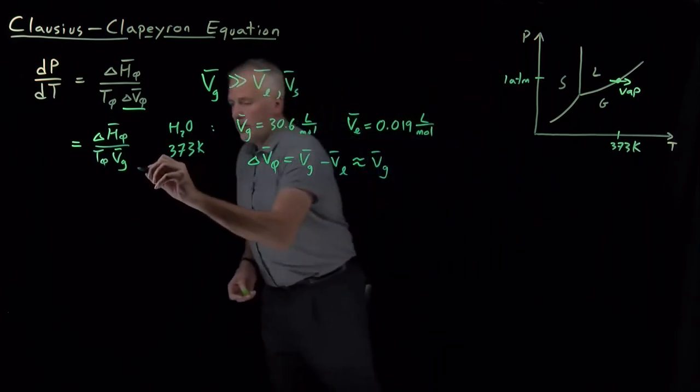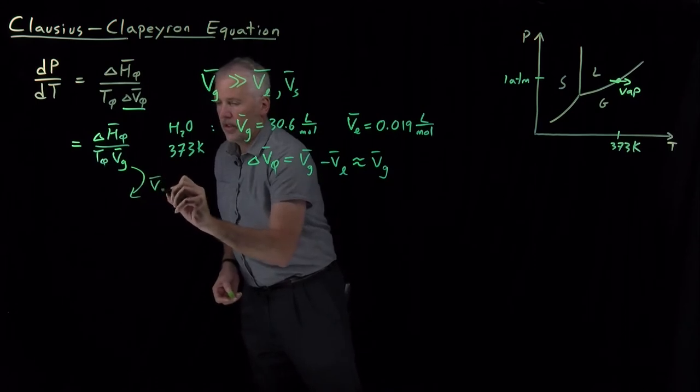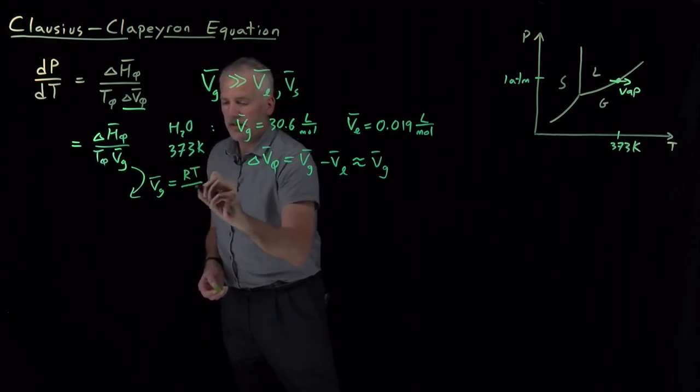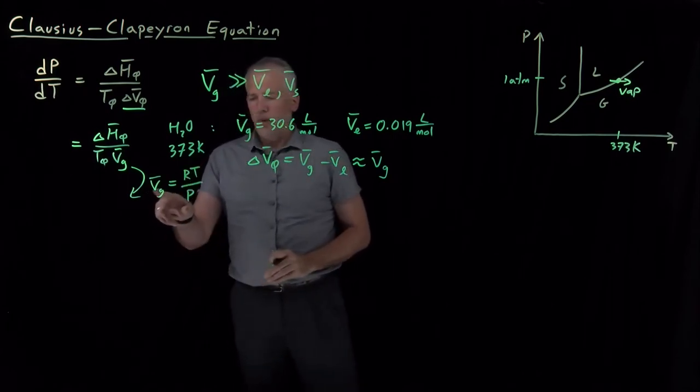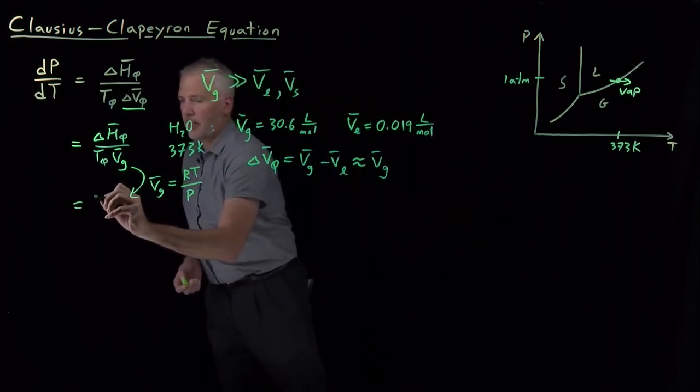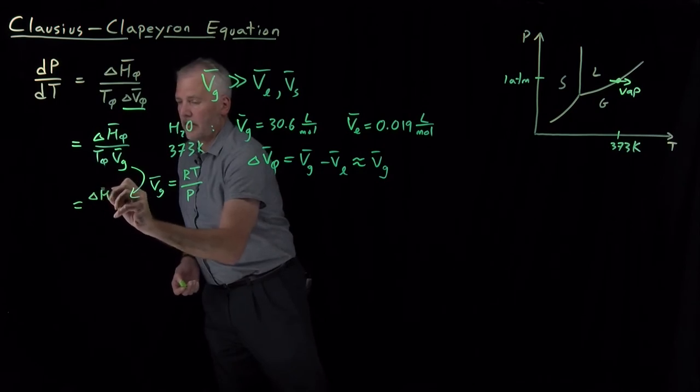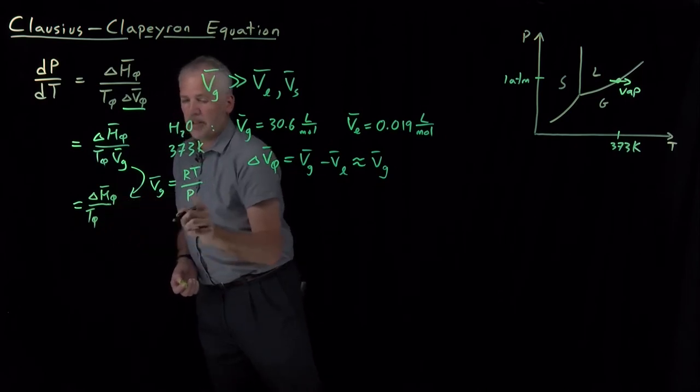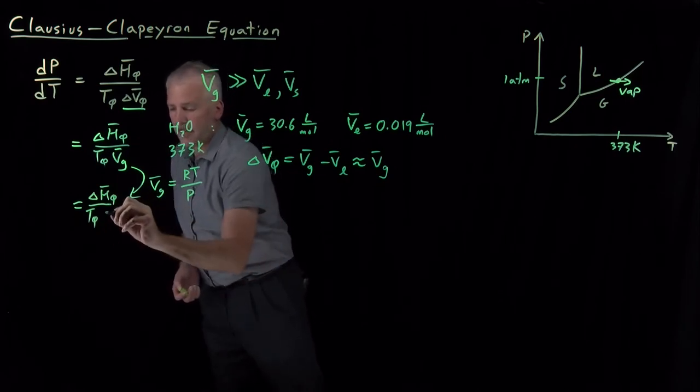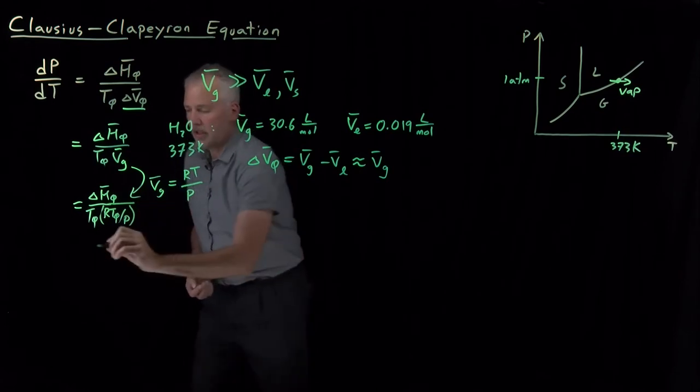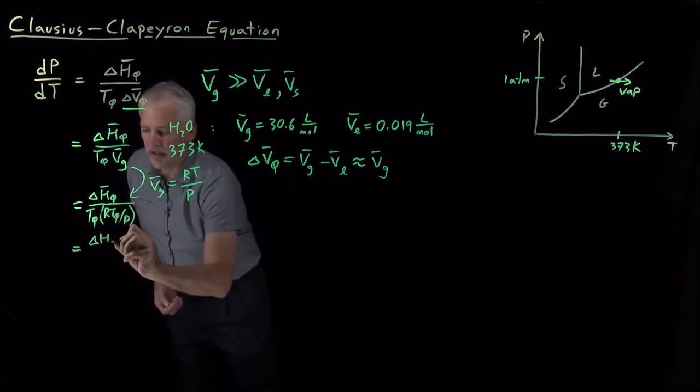So, what that then allows us to do, if we assume that the gas is at least somewhat like an ideal gas, that molar volume is RT over P. So, we can rewrite the Clapeyron equation now as enthalpy of vaporization divided by the temperature at which the vaporization takes place, and now I'll write the molar volume of the gas as RT. That's the temperature of the phase change divided by pressure. So, that quotient is in the denominator.